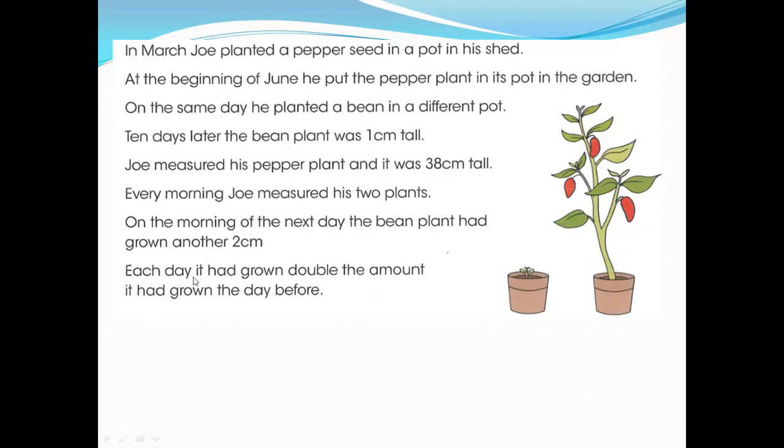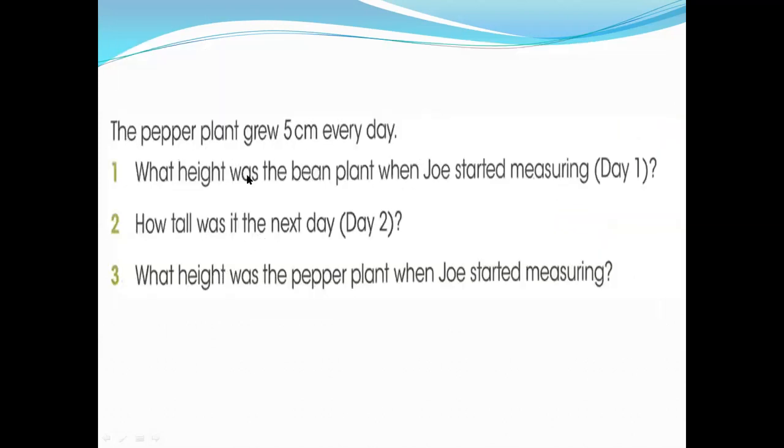Each day it had grown double the amount it had grown the day before. Which means it's double after the previous one. Previous amount means the double of this. Now the question. The pepper plant grew 5 centimeter every day. What height was the bean plant when you start measuring day 1? You can see in the question on the day 1 it was 1 centimeter. On the day 2 it was also in the question available it make double 1 plus 1, 2 centimeters. 2 centimeter plus 1 from the previous. It means they are making double and also the amount with the previous 2 plus 1, 3 centimeter. What height was the pepper plant when you started measuring? In the question available 38 centimeter. The pepper plant on the 10th day or on the first day for measurement. On the first day the bean plant was 1 centimeter and pepper plant was 38 centimeter.